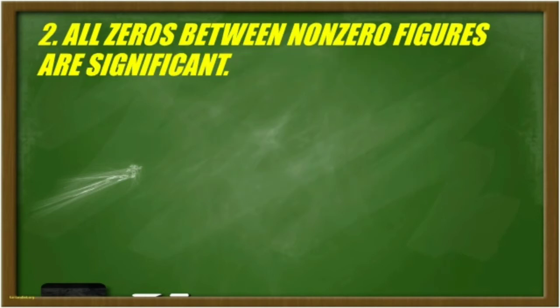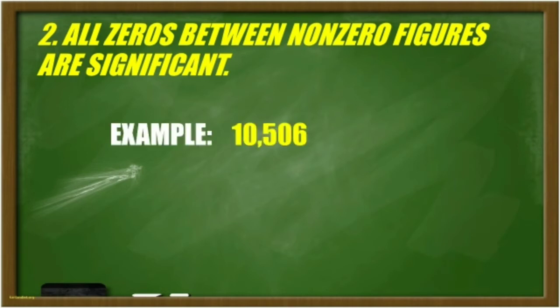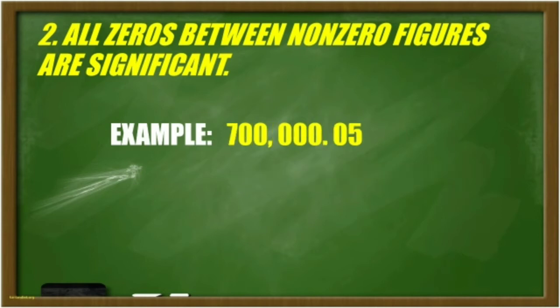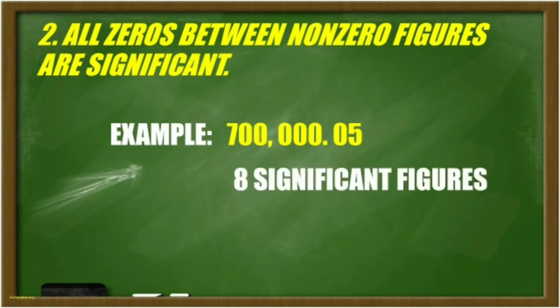In rule number 2, all zeros between non-zero figures are significant. For example, in 10506, there are 5 significant figures. The 0 between 1 and 5, and the 0 between 5 and 6 are significant figures. Another example: in 700000.05, there are 8 significant figures. All the zeros are counted since they are in between the 7 and 5 digits.